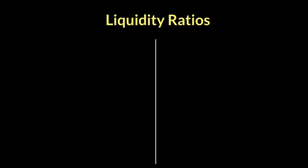Debts are shown as liabilities in your statement of financial position, so it shows how quickly you're able to cover the current liabilities of a business. There are two types of ratios we're going to look at today: the current ratio and the asset test ratio. Both of these ratios are concerned with calculating the amount of liquidity a company has, shown by a calculation of the working capital of the business.